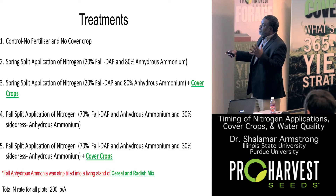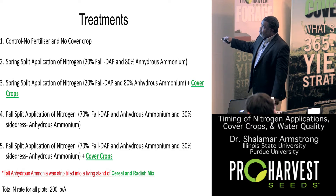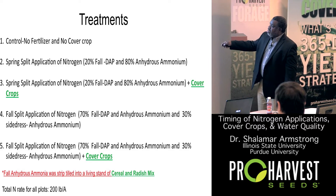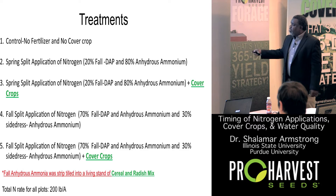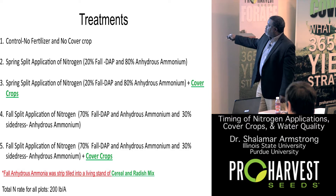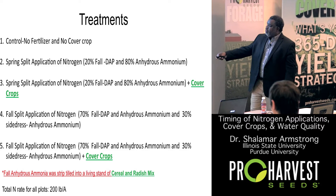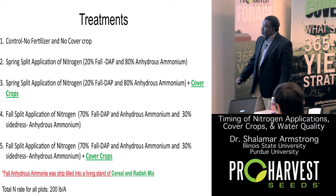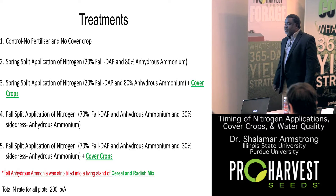The next two treatments is the spring dominated split. We put 80% down in the spring, with 20% in the fall with DAP, with and without cover crops. The next two split is fall dominated - 70% down in the fall with anhydrous and DAP, 30% in the spring. All fields receive about 200 pounds per acre, which is close to the MRTN recommended rate according to U of I. All of the anhydrous where you had cover crops were strip tilled into cereal rye and radish mix.